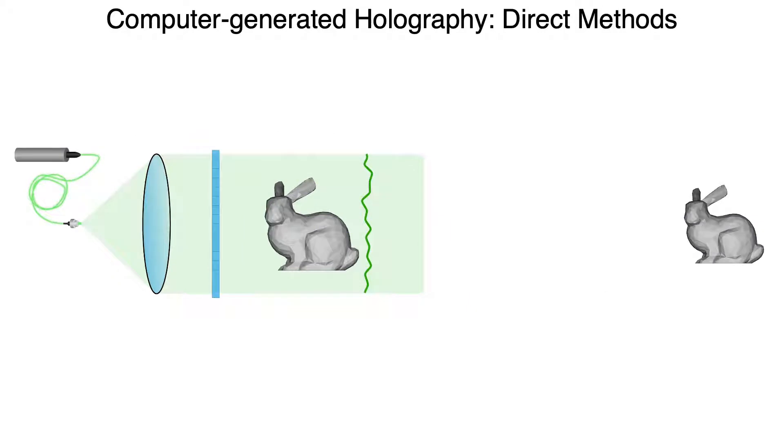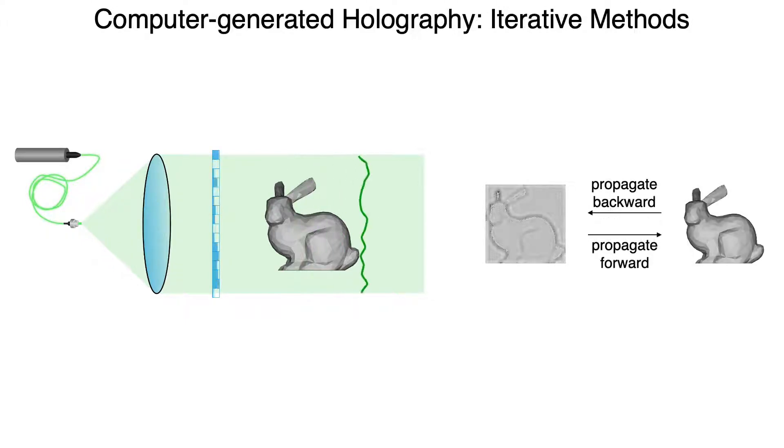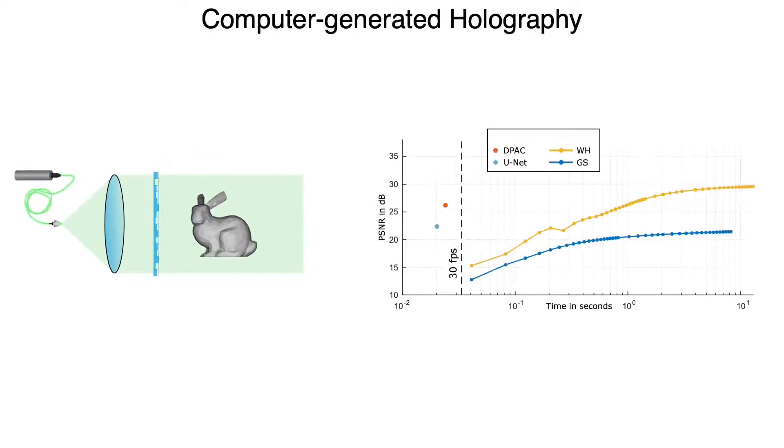Computer-generated holography algorithms convert a target intensity plane to a phase pattern on the SLM. Direct methods propagate a wave field representing the target image to the SLM and convert the complex-valued field there to a phase-only pattern. Iterative methods propagate the field back and forth between source and target plane until an optimal phase pattern is found for a specific target intensity. Direct methods are typically fast but offer limited image quality. Iterative methods are much slower but offer better quality.